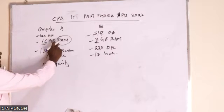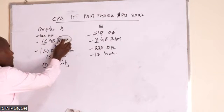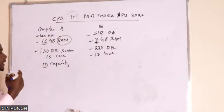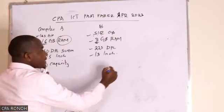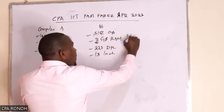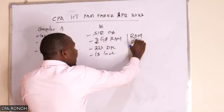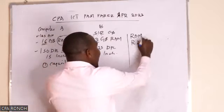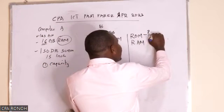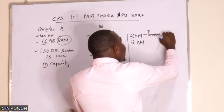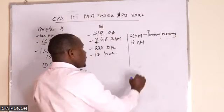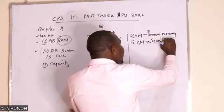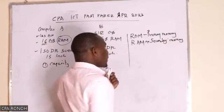Computer A has 16 GB RAM — that is Random Access Memory — and Computer B has 8 GB. We said we have two types of memory: ROM and RAM. We have primary memory and secondary memory of a computer.